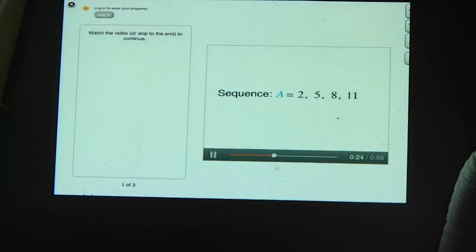We can also label the individual numbers in the sequence, which are known as the terms of the sequence. The first term is A1, the second term is A2, the third is A3, and the fourth is A4. This sequence has four terms, so it's an example of a finite sequence. Other sequences have an infinite number of terms, indicated by the dot dot dot at the end of the sequence. This means the sequence continues on forever, so it's called an infinite sequence.